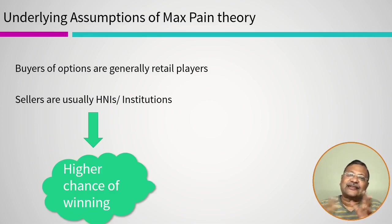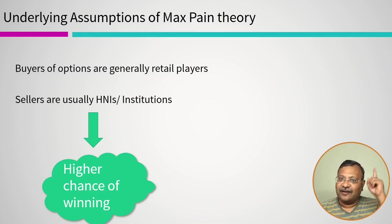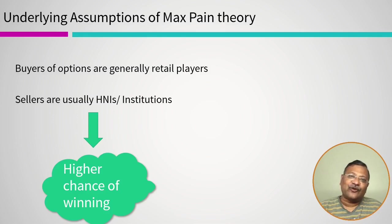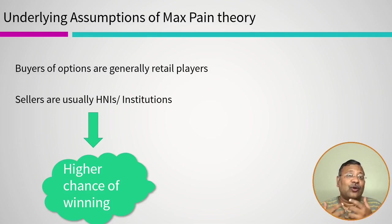Before we discuss the max pain theory, let us understand a few underlying assumptions. As discussed in my series of videos on option chain data — a link is provided — buyers of options are generally retail players who have a limited capacity to absorb losses, whereas sellers of options are highly knowledgeable players because sellers of options are exposed to unlimited losses.